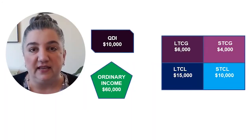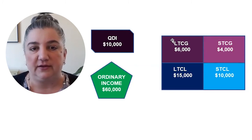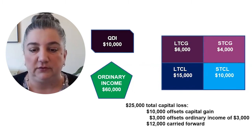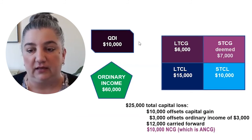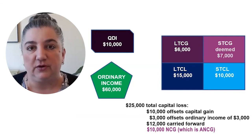If we take the same example — long-term capital gain of $6,000, short-term capital gain of $4,000, long-term capital loss of $15,000, and short-term capital loss of $10,000 — but add $10,000 of qualified dividend income, we have exactly the same results with respect to the capital losses. The only difference is that the qualified dividend income is treated as net capital gain and adjusted net capital gain. So in addition to this being a limitation on losses problem, the taxpayer would have an adjusted net capital gain of $10,000.